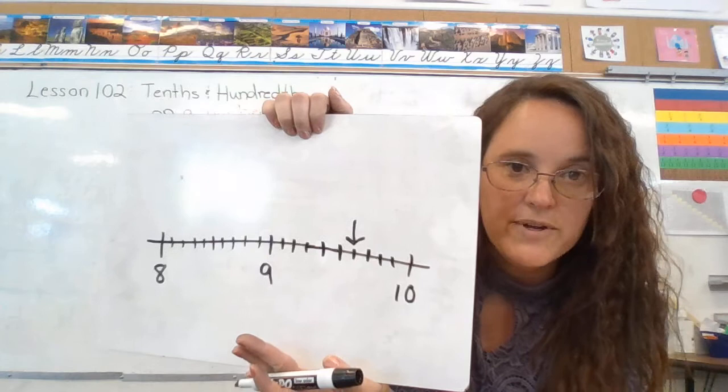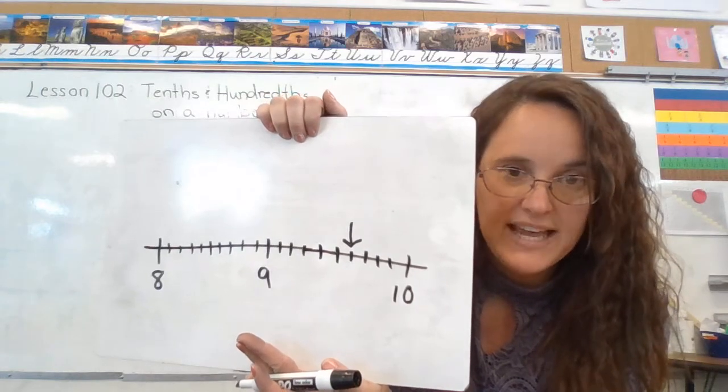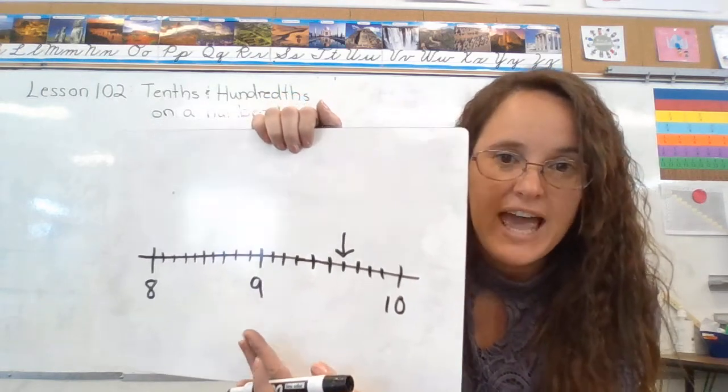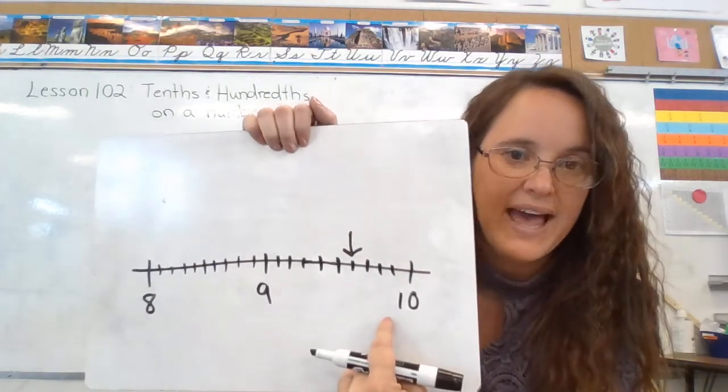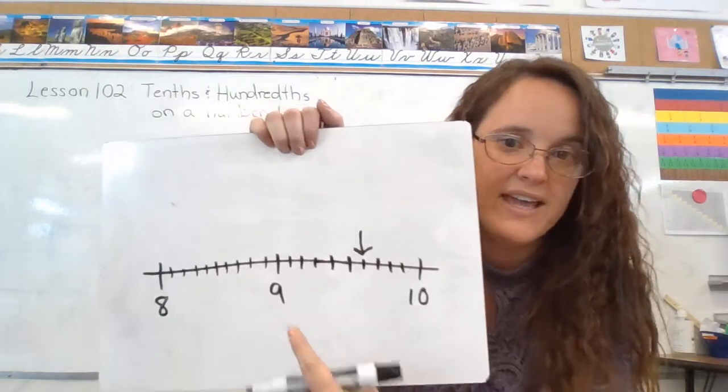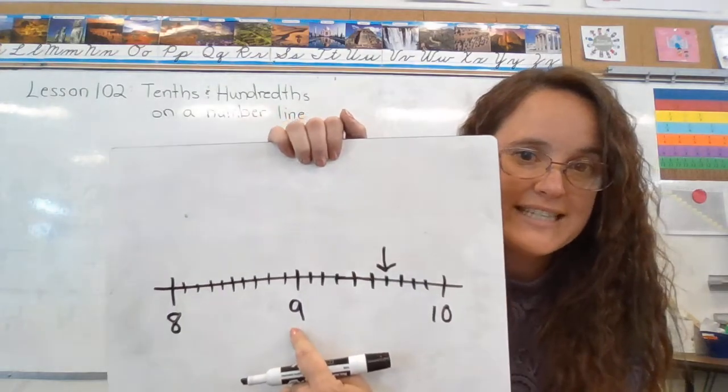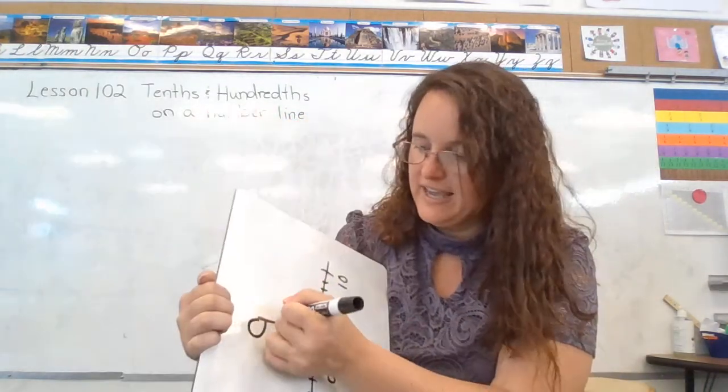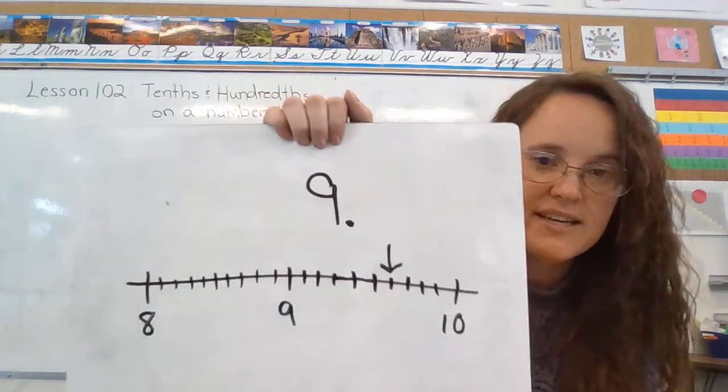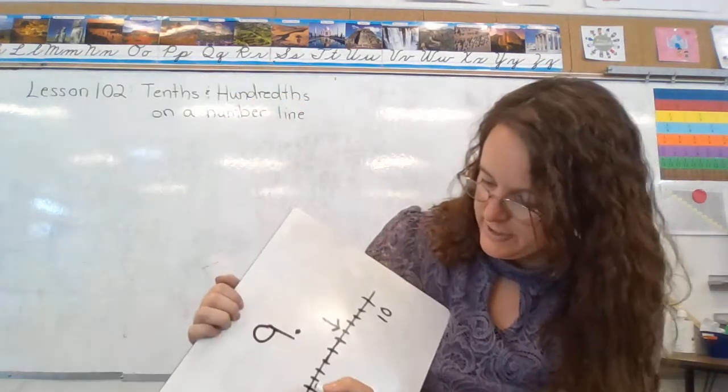So when we're going to write our whole number, the number that goes in the 1s place, we want to look at what's the last whole number that this arrow passed. If we're going from left to right, the last number the arrow passed is 9. So we want to write a 9, and then we're talking decimal point.